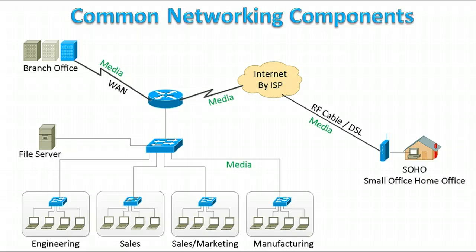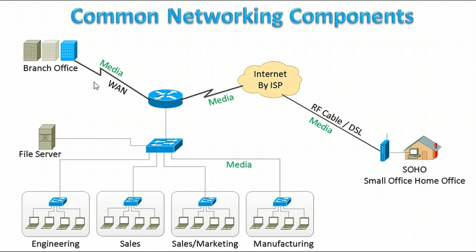This network topology consists of switches, which are Layer 2 devices, a router which is a Layer 3 device, and a file server. There are different media here — a WAN link for the remote office, the internet, and remote access for the small office home office.